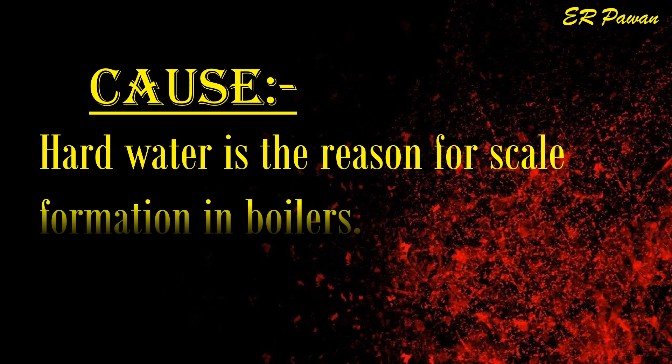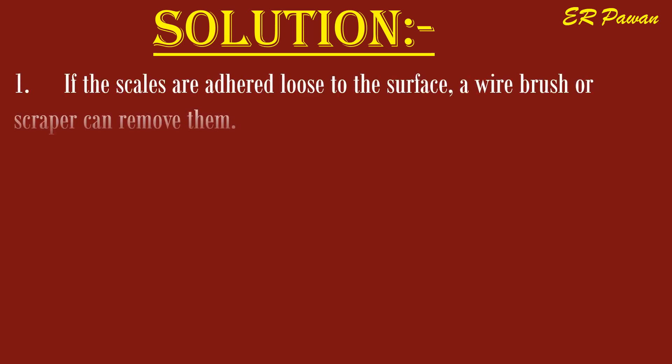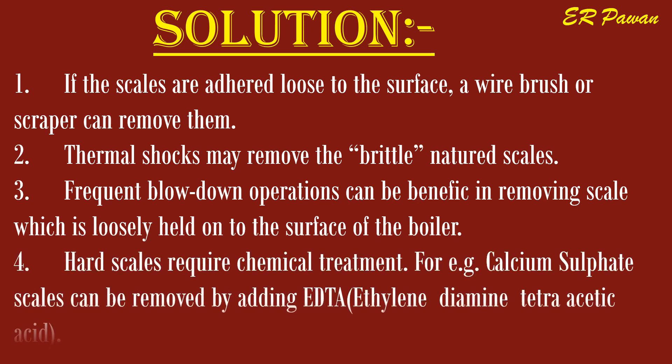Cause of scale: hard water is the primary reason for scale formation in boilers. Solutions: one, if scales are loosely adhered, a wire brush or scraper can remove them; two, thermal shocks may remove brittle-natured scales; three, frequent blowdown operations can help remove loosely-held scale; four, hard scales require chemical treatment — for example, calcium sulfate scales can be removed by adding ethylene diamine tetra-acetic acid (EDTA).